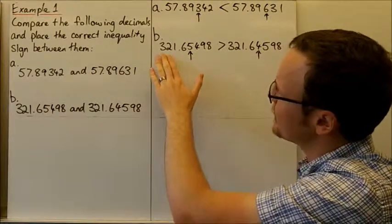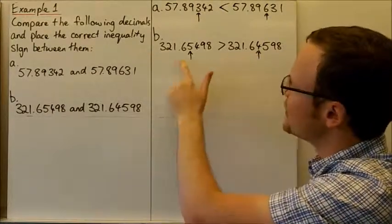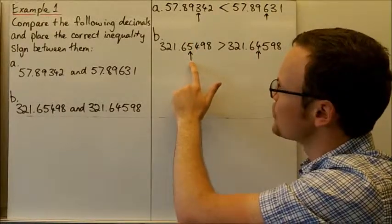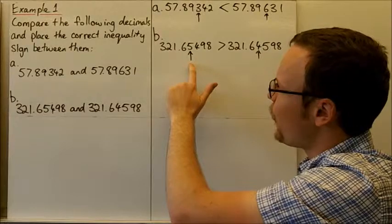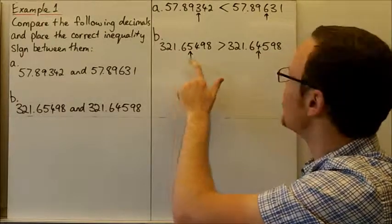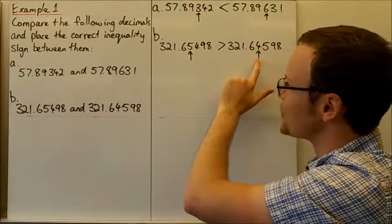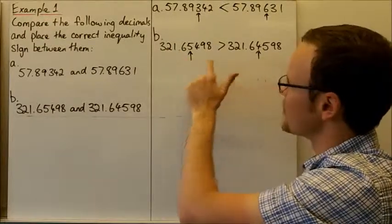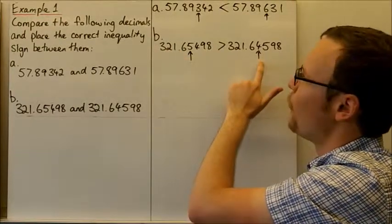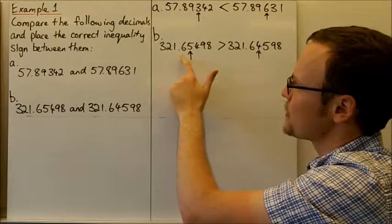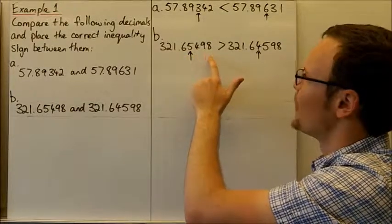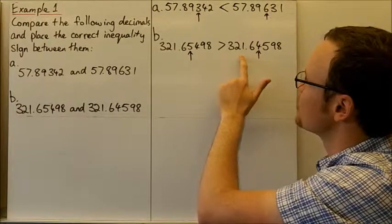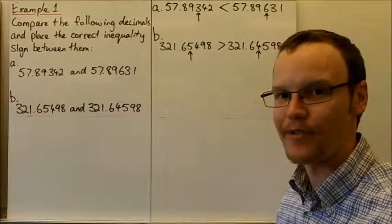For the second pair, the numbers only differ in the hundredths column, where we've got five hundredths versus four hundredths. So this first number is larger, meaning 321.65498 is greater than 321.64598.